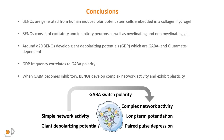To summarize, PINOs generated from induced pluripotent stem cells embedded in a collagen hydrogel consist of excitatory and inhibitory neurons as well as myelinating and non-myelinating glia. Around day 20, PINOs develop giant depolarizing potentials, which are GABA and glutamate dependent. GDP frequency correlates to GABA polarity, and after GABA polarity switches to inhibitory, PINOs develop complex network activity and exhibit plasticity. Since features of network development in PINOs present similarities to the human brain, we believe that they will prove to be a useful system for personalized medicine.